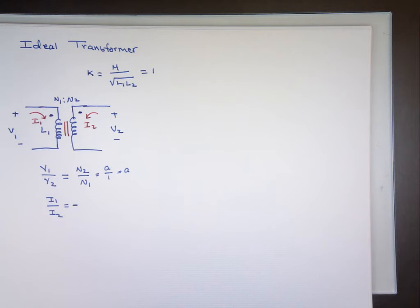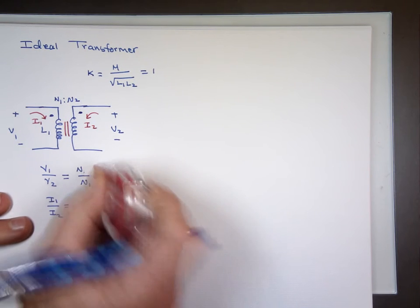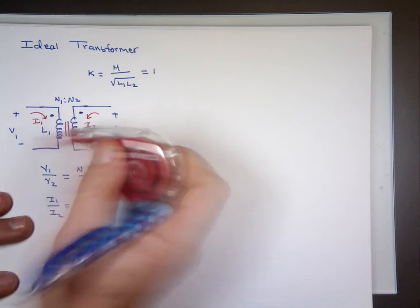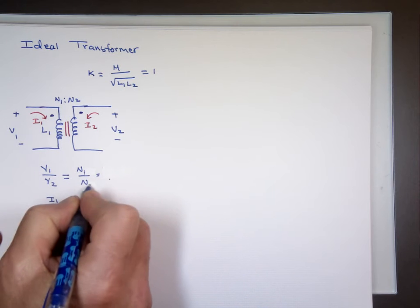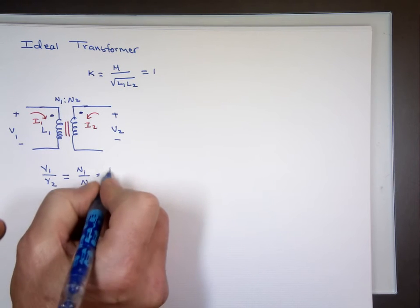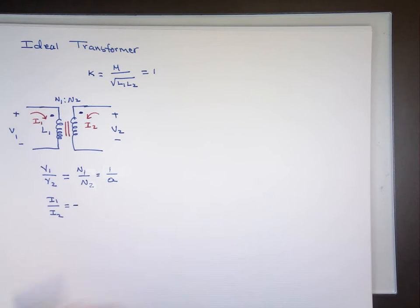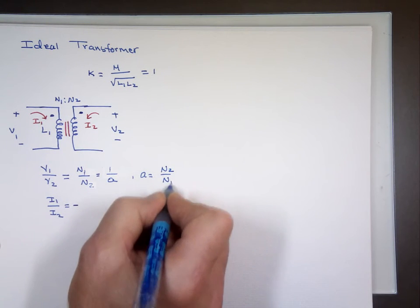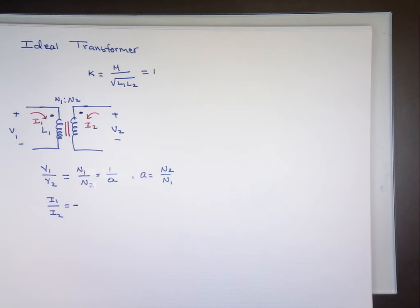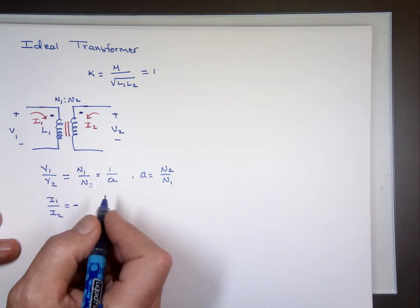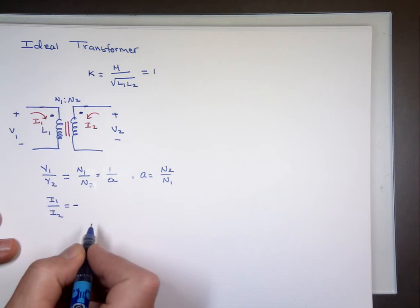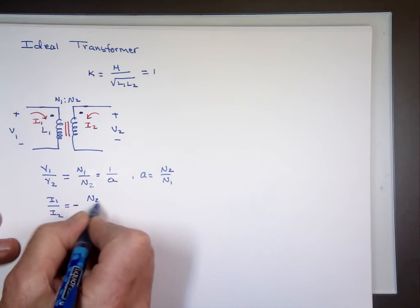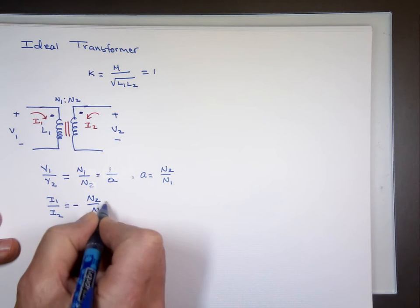N1 to N2, which is 1 over A. The ratio was flip-flopped — our book is not great on this subject. That's 1 over A, where A is defined as N2 to N1. So what is I-sub-1 to I-sub-2? Negative N2 to N1, which is negative A.